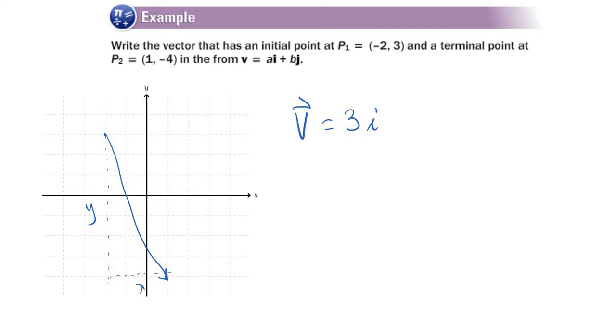And from 3 to negative 4, of course you can count them. It went seven units downward. So it's going to be minus 7j. And that is the representation of this vector in the i plus j form.